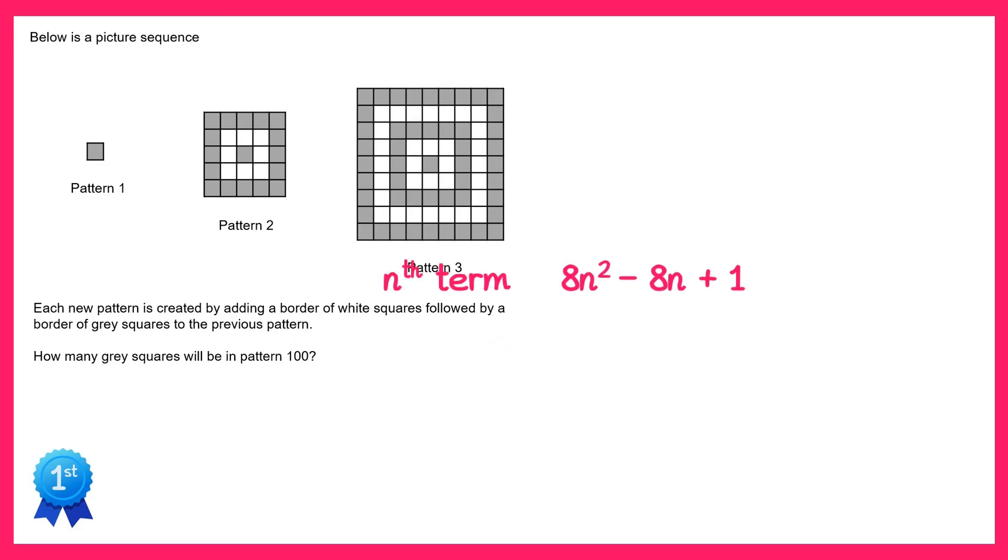Now remember in the question they asked us for how many grey squares there will be in pattern 100. So all we need to do is change n for 100. So we've got 8 lots of 100 squared, minus 8 lots of 100, plus 1.